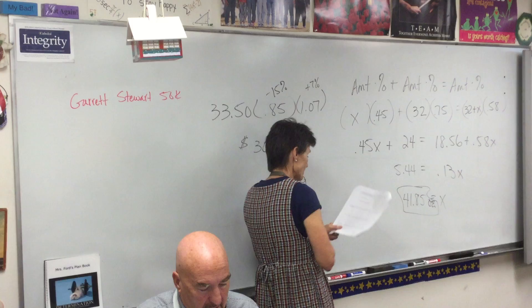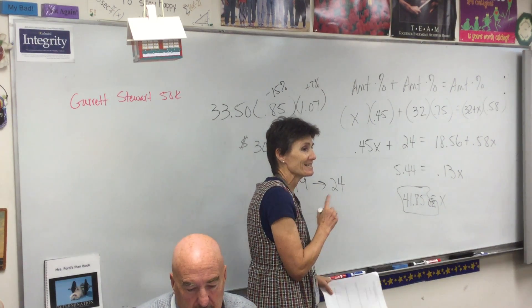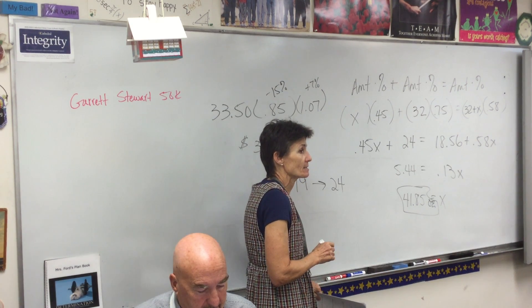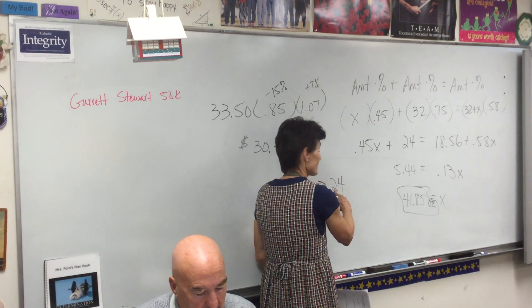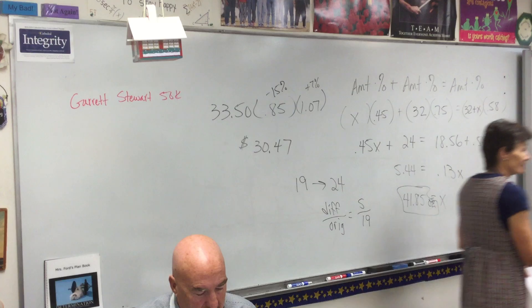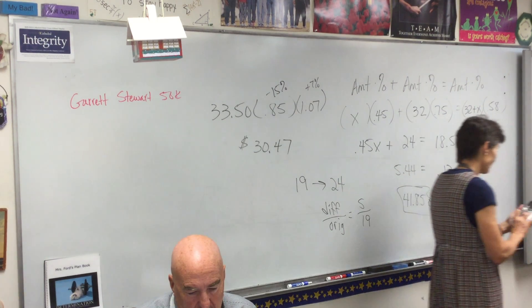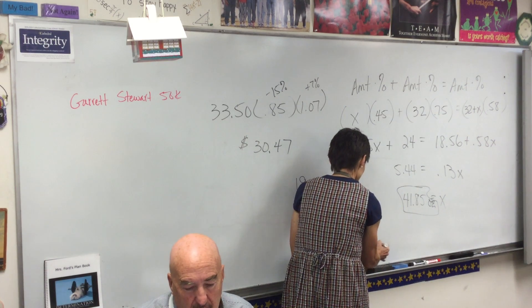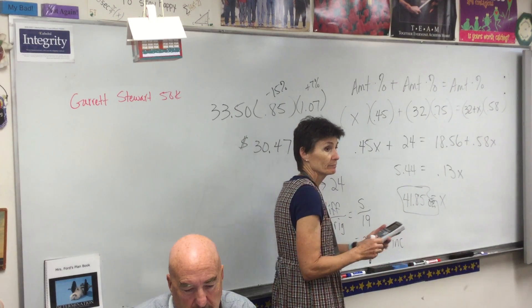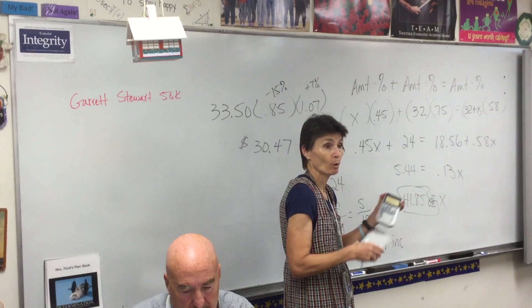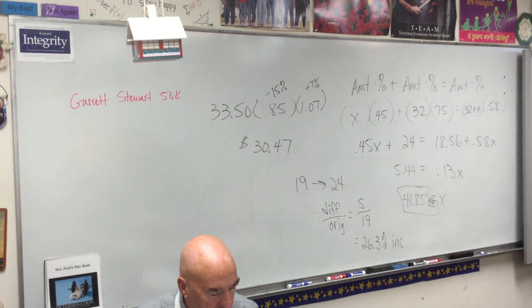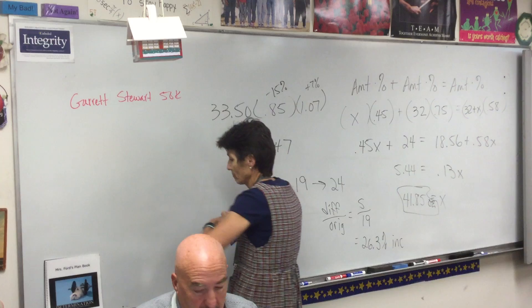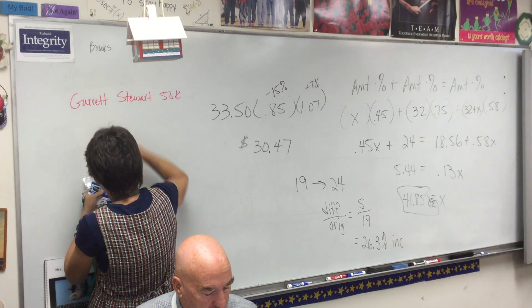All right. Last year the team won 19 games. This year they won 24 games. So we went from 19 to 24. What is the percent of increase? How do we find the percent of change? Difference over original. So the difference is 5. The original is 19. So your percentage is 5 divided by 19, which is about 26.3% increase. In other words, the team won 26.3% more games this year than they did last year. Okay.